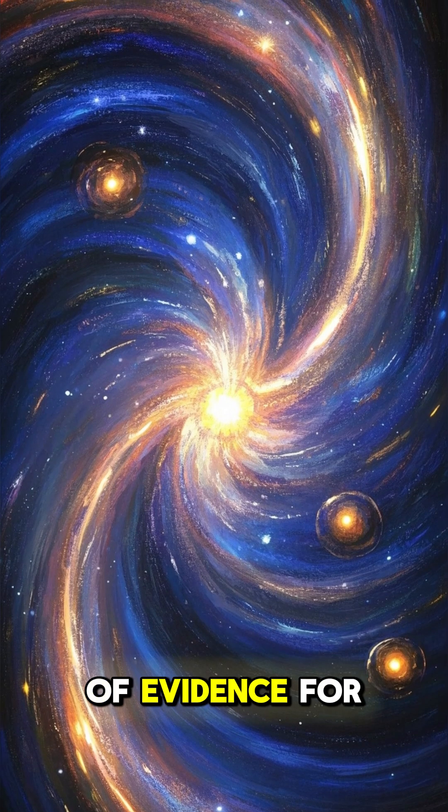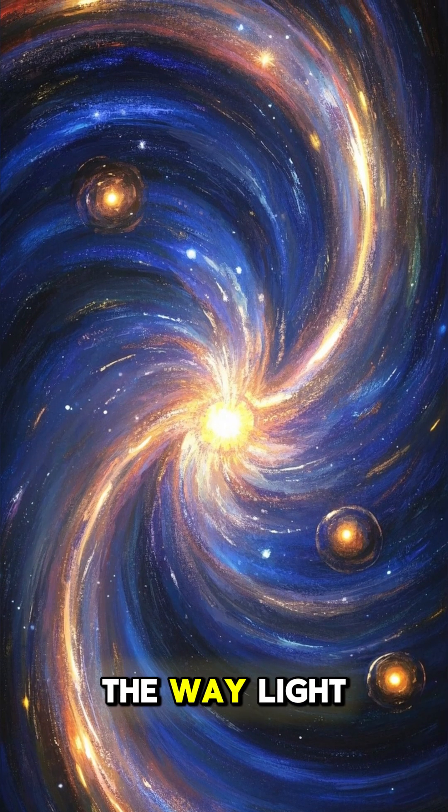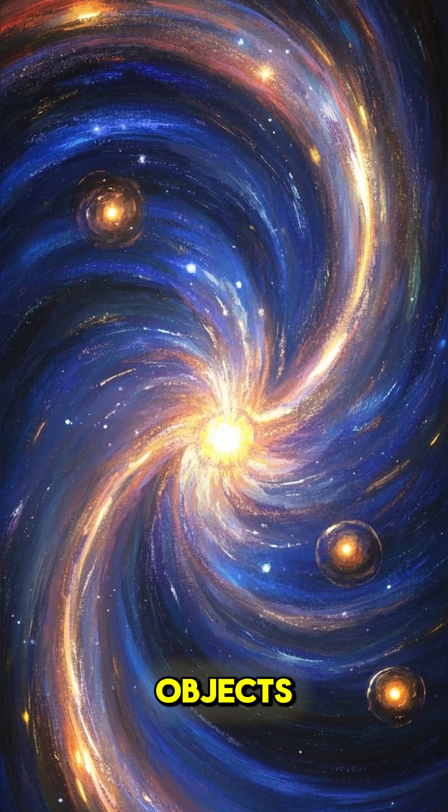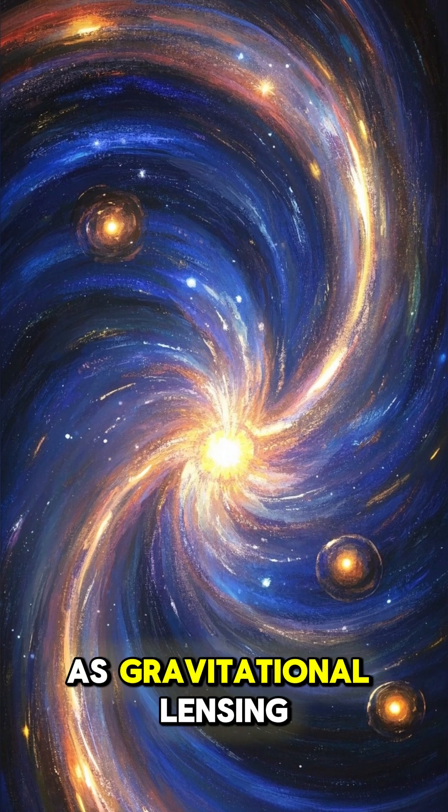One of the most compelling pieces of evidence for dark matter comes from the way light bends around massive objects, a phenomenon known as gravitational lensing.